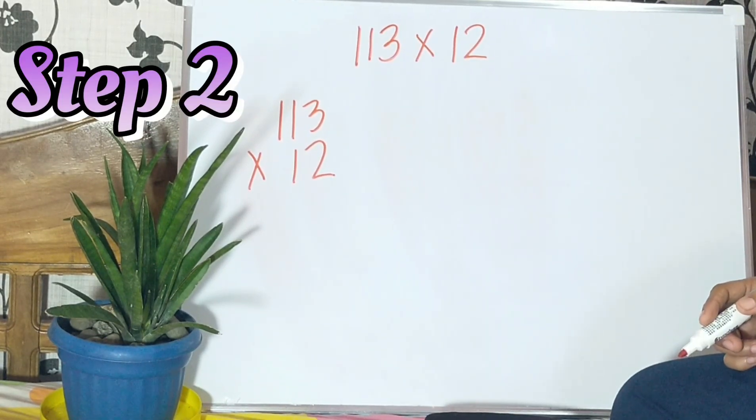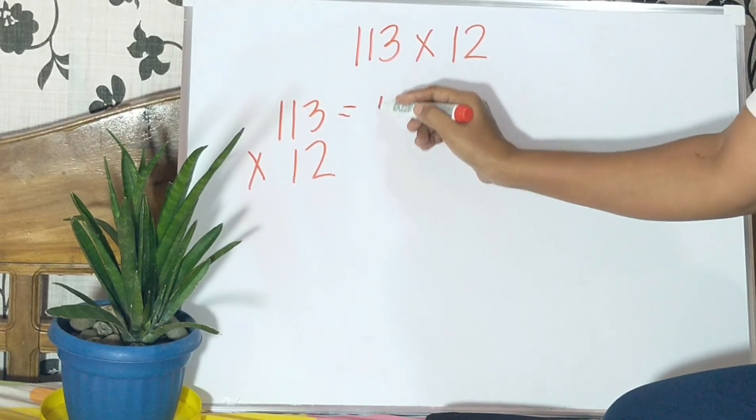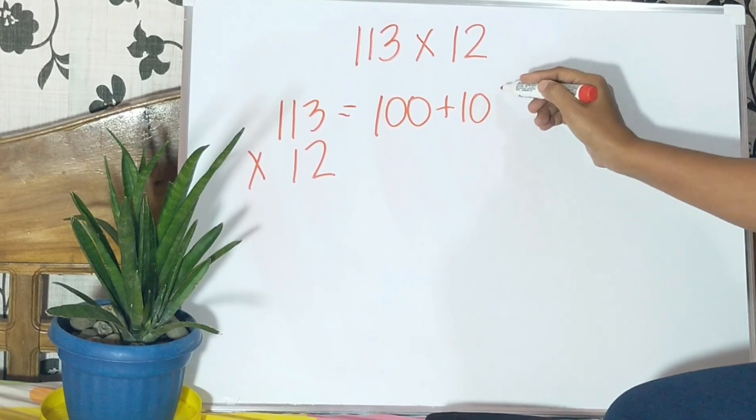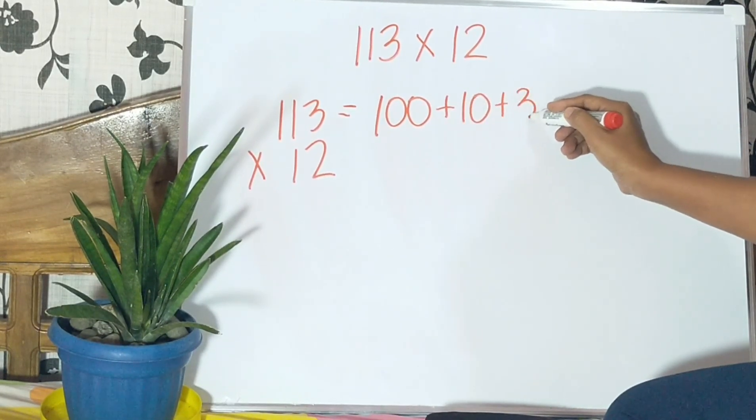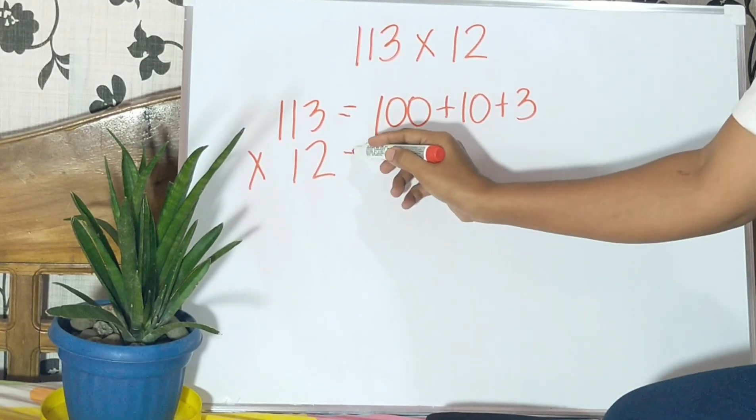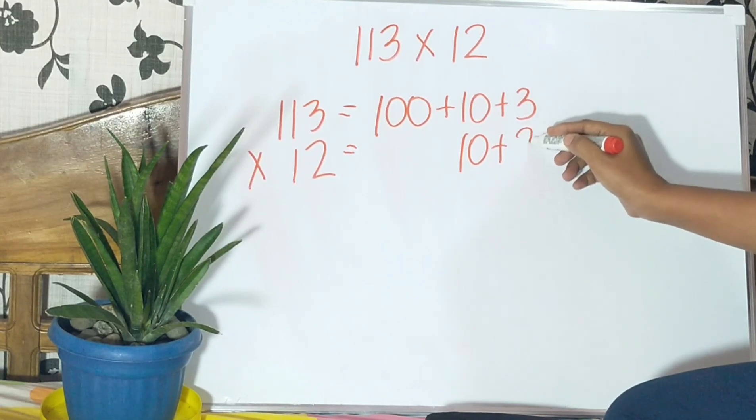Step 2: Write the expanded form of the multiplicand and the multiplier. For 113, we have 100 plus 10 plus 3. And for 12, we have 10 plus 2.